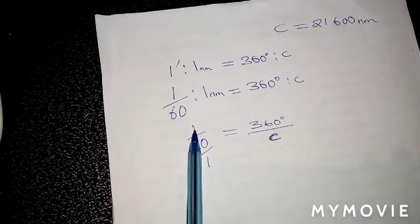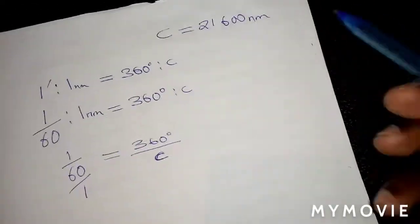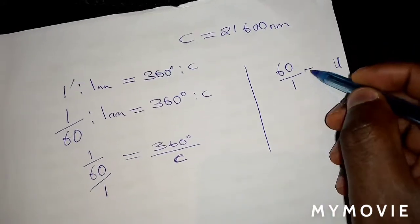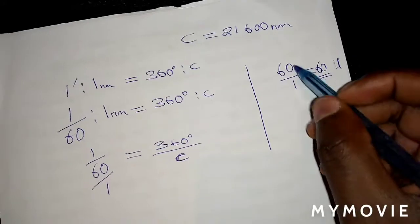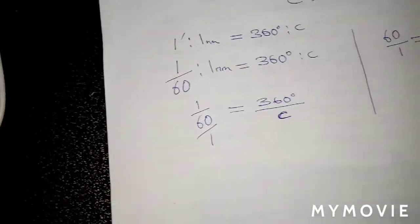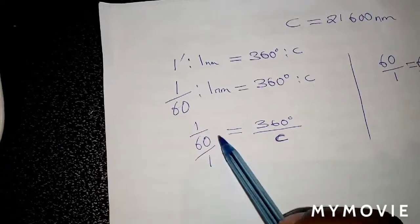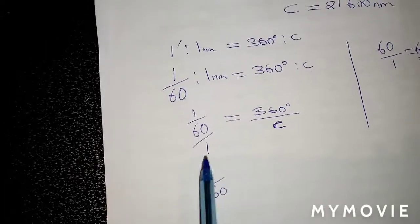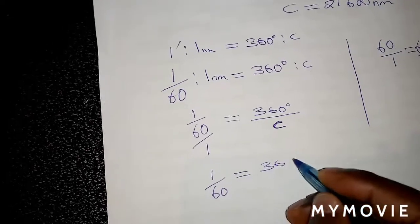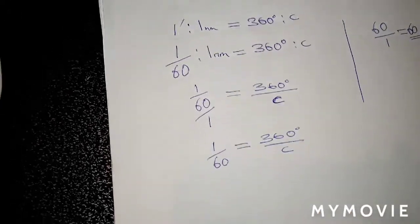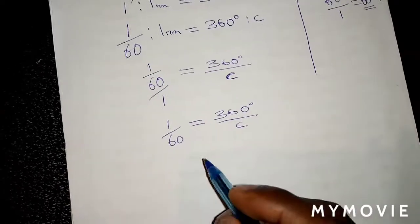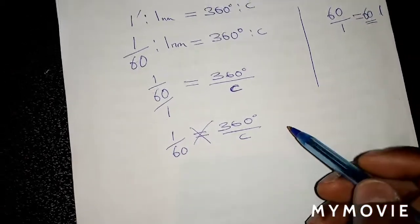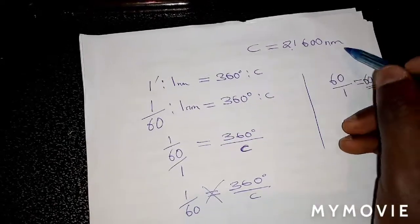If I were to flip that one on top, we're going to have 60 over 1, which we can agree is just 60 because 60 divided by 1 is 60. So I'm going to simplify this fraction: 1 over 60 is equal to 360 degrees over circumference. Then I can cross-multiply, because the idea is to show my circumference to be equal to 21,600 nautical miles.